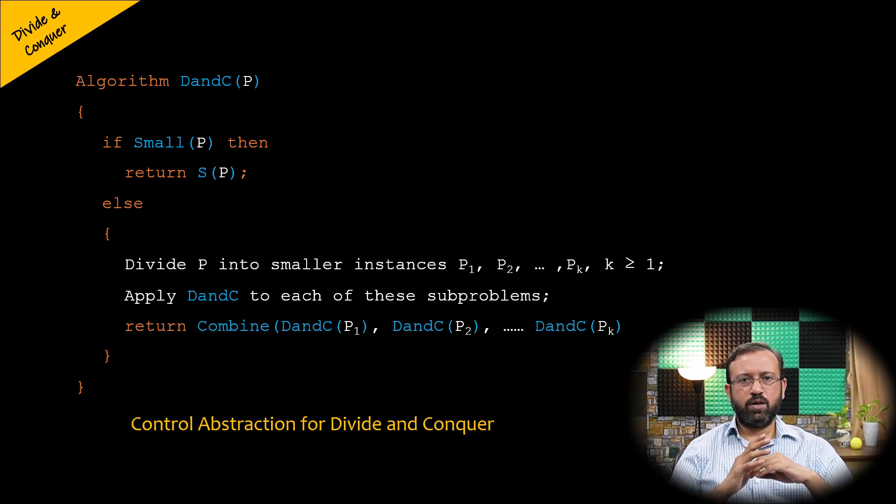This abstract algorithm for divide and conquer approach is also known as control abstraction. What this means is that the flow of control for the approach is clearly defined in the algorithm. But the operations of how to divide and how to combine or other operations are left undefined and depends on the problem being solved.